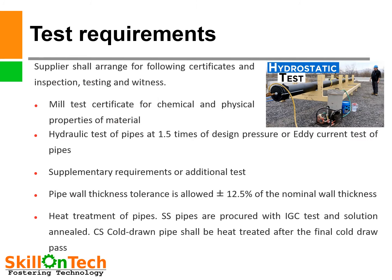Test requirements. We must specify the test requirements of the pipe. Suppliers shall arrange for the following certificates and inspection: mill test certificate for chemical and physical properties of material shall be obtained. Hydraulic test of pipes at 1.5 times design pressure, or eddy current test of pipes, shall be mentioned. Supplementary or additional tests wherever applicable shall also be mentioned. Pipe wall thickness tolerance is allowed up to ±12.5% of the nominal wall thickness. While purchasing a pipe, we can measure the thickness to check whether it is within tolerance or not. If a pipe is not within allowable tolerances, then it can be rejected.